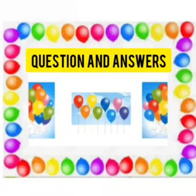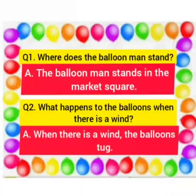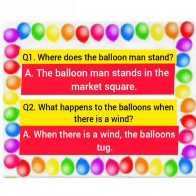There are some question and answers. Let us see them. The first question is: where does the balloon man stand? Answer: the balloon man stands in the market square. What happens to the balloon when there is a wind? Answer: when there is a wind, the balloons tug. Jab hawa chalti hai, the balloons hawa mein lehlaate hai.